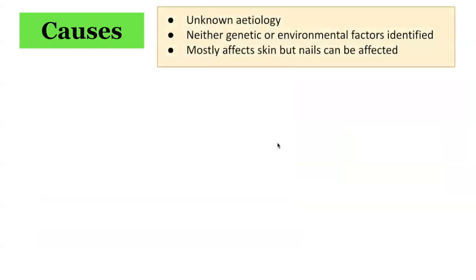What are the causes associated with lichen striatus? The exact cause is unknown. It's thought that both genetic and environmental factors contribute to lichen striatus, however the exact nature of these factors have yet to be identified. It's thought that lichen striatus may represent a manifestation of atopy, whereby the abnormal immune responses associated with atopy predisposes a person to lichen striatus, and that an infectious agent may act as the trigger.